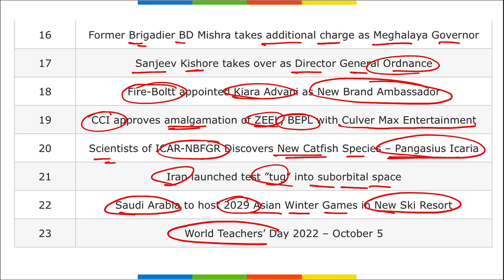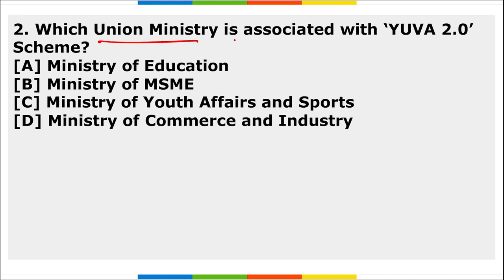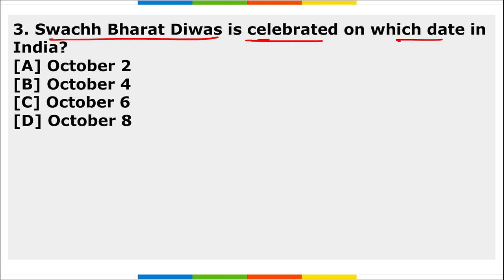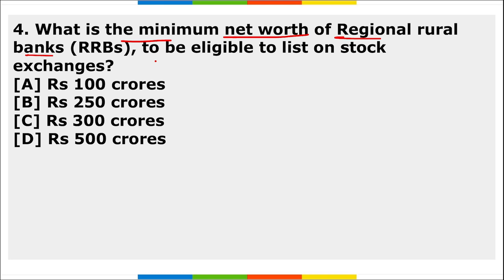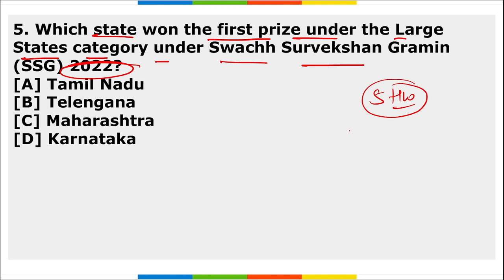Homework questions for today: First, what is the name of the first indigenously developed Light Combat Helicopter? Second, which union ministry is associated with the UVA 2.0 scheme? Third, Swachh Bharat Divas is celebrated on which date in India? Fourth, what is the minimum net worth of regional rural banks to be eligible to list on stock exchanges? Fifth, which state won the first prize under the 'Least States' category under Swachh Survekshan Grameen 2022? No cheating — do your own research.